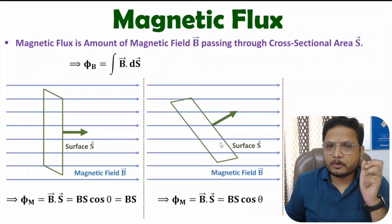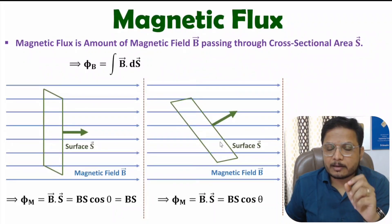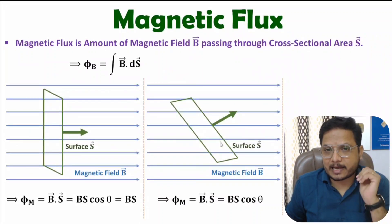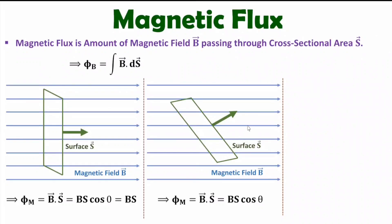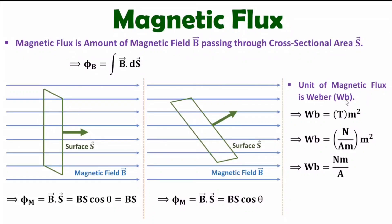Now I will explain the basic unit of magnetic flux. In general, we calculate magnetic flux in terms of Weber. The unit of magnetic flux is Weber, which can be translated into SI units. Weber equals magnetic field multiplied by area, so Weber equals Tesla times meter squared. Tesla is the unit of magnetic field, which is Newton divided by ampere·meter. After cancelling one meter, Weber equals Newton·meter per ampere. So the unit of magnetic flux is Weber, or equivalently Newton·meter per ampere.